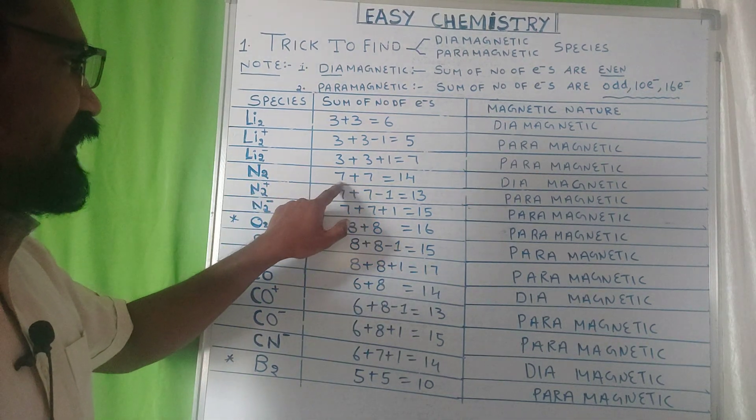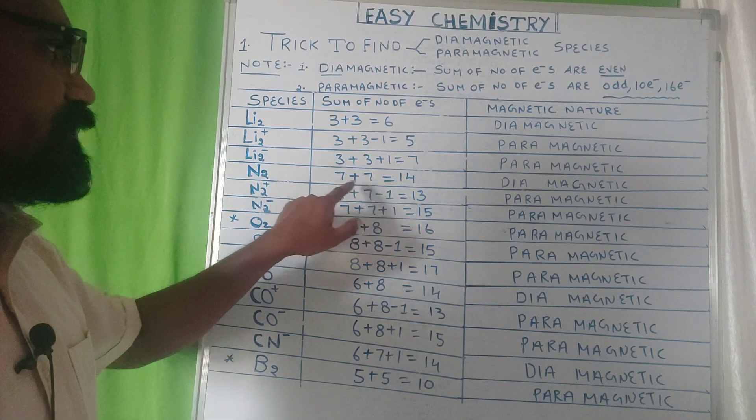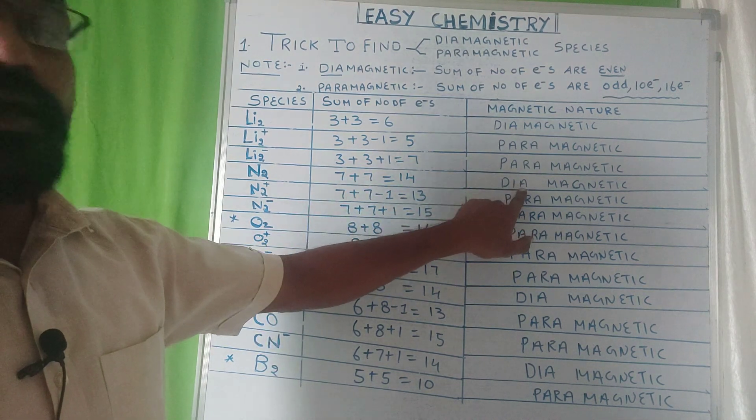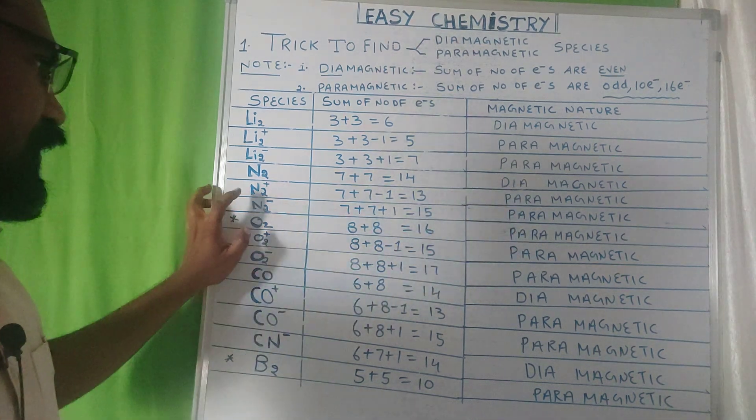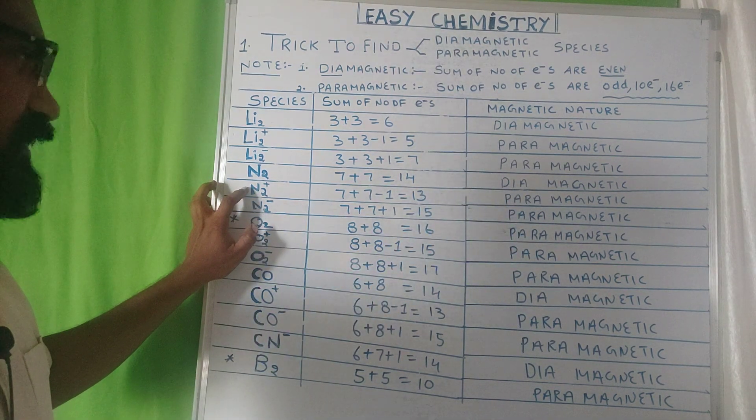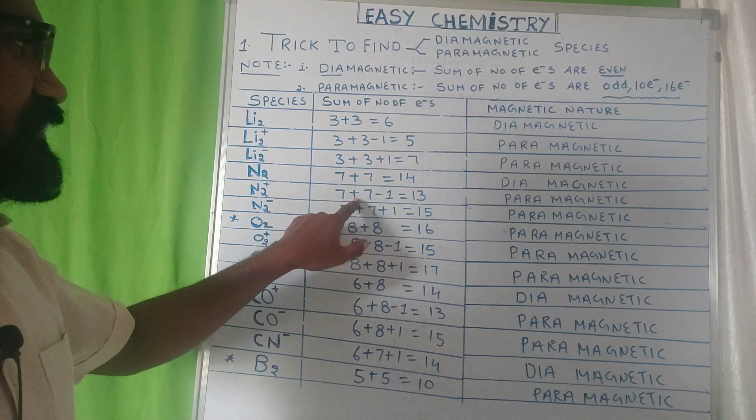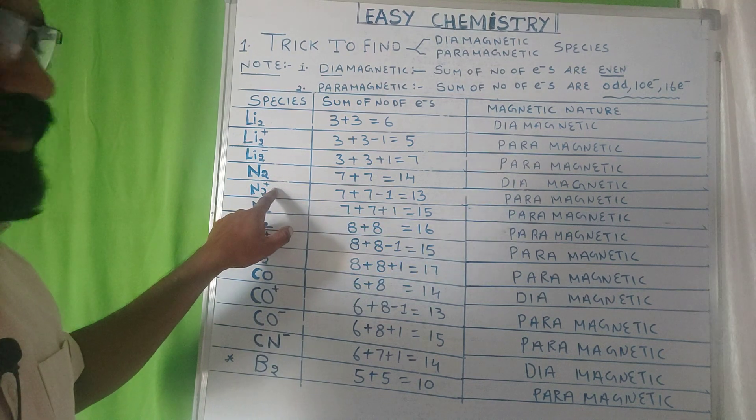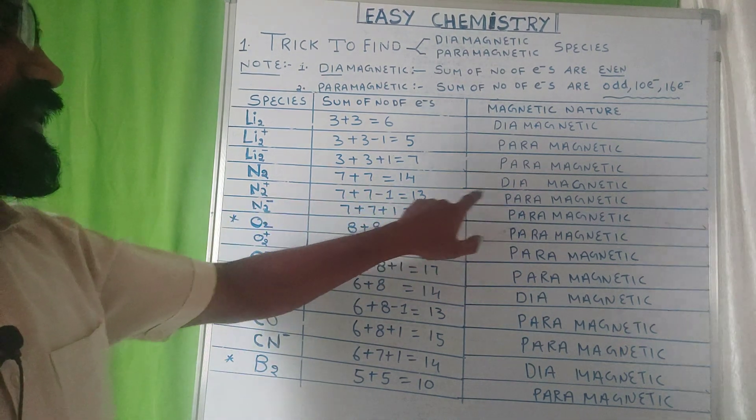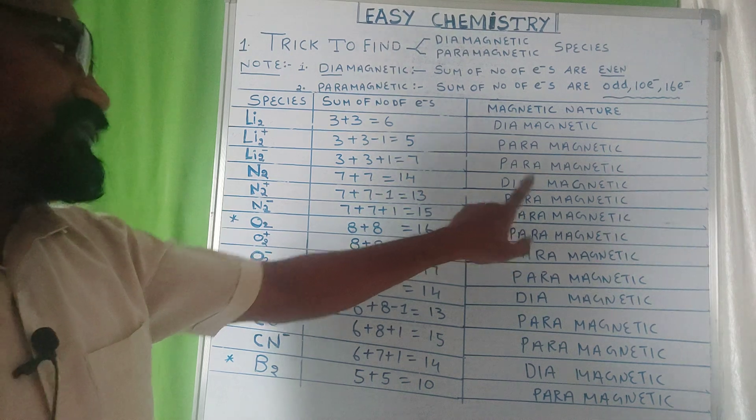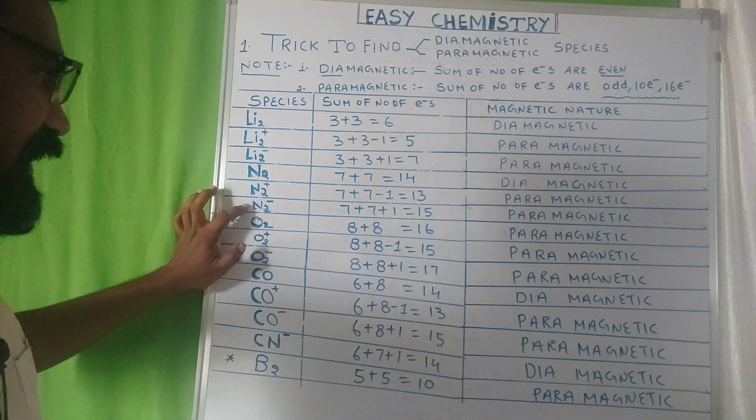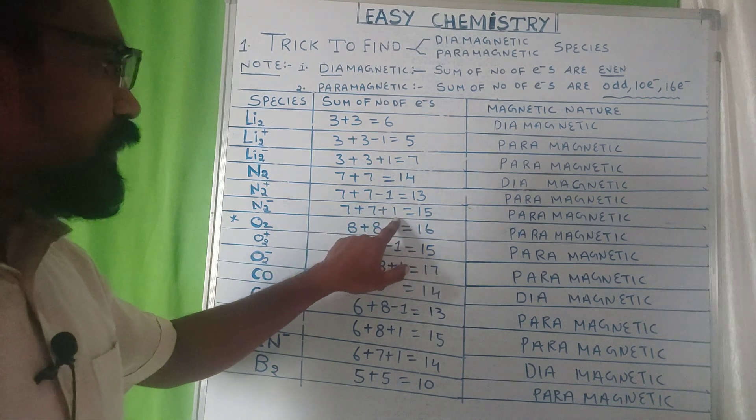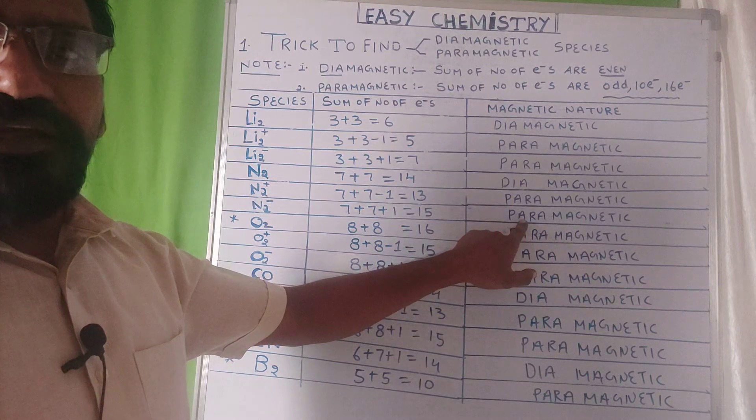N2: nitrogen atomic number 7, another 7, equals 14. It has diamagnetic nature. If you see N2 plus, 7 plus 7 minus 1 because it has plus 1 charge, equals 13. It has paramagnetic nature. N2 minus: 7 plus 7 plus 1 equals 15, paramagnetic nature.